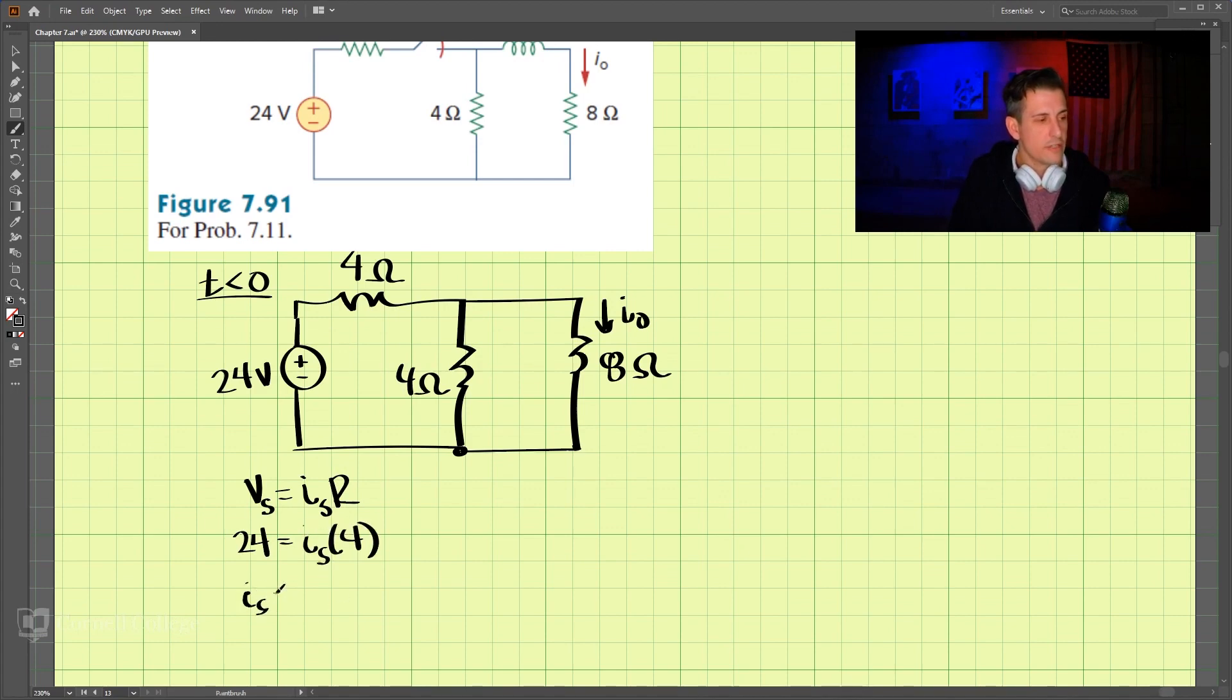And we have 24 volts, and we have a resistance of 4-ohms. So our I-source is going to be 6 amps. So if we draw that circuit now, we have our, so we did a source transformation, and then we have our 4-ohms, 4-ohms.